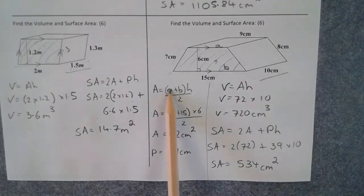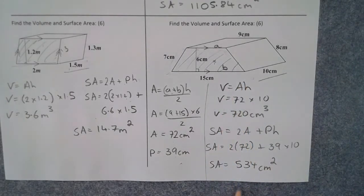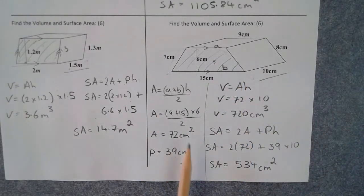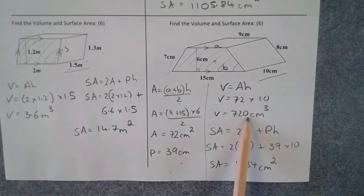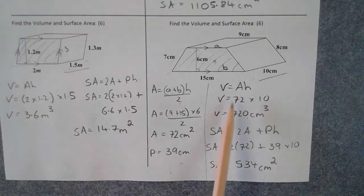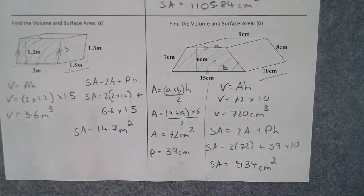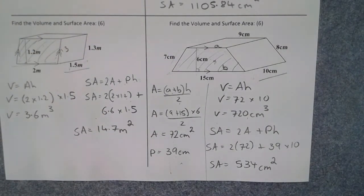With prisms, working out the area and perimeter separately first makes the volume and surface area much quicker to calculate, and it clearly shows your working. Make sure you use V= and equals signs in every line of working so the method is clear. That's how you do week two's work on volume and surface area — please mark your own.